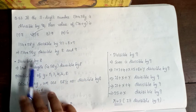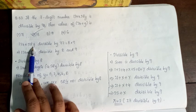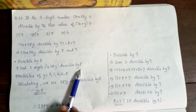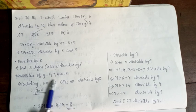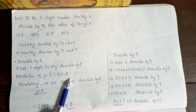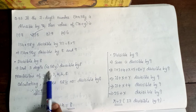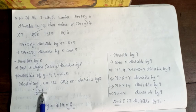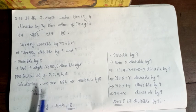For divisibility by 8, the last three digits 58y must be divisible by 8. The possible values of y are 0, 2, 4, 6, 8. Checking 58y divisible by 8, we get y equals 4.